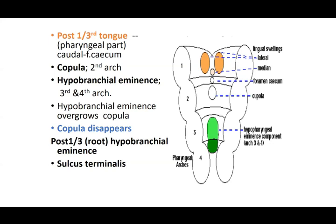The hypobranchial eminence takes a major role in forming the posterior part of the tongue — it overgrows and covers the copula, so the copula disappears. The tuberculum impar disappears anteriorly, and the copula disappears posteriorly. The posterior third is formed by the hypobranchial eminence. The junction between the anterior two-thirds and the posterior one-third is the sulcus terminalis. Copula and the median swelling both disappear.